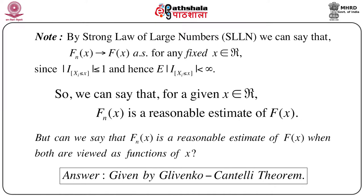Since the modulus of the indicator 1(X_i ≤ x) is ≤ 1, and the expectation of that indicator is finite, we can immediately say that for a given x in the real line, F_n(x) can be treated as a reasonable estimate of F(x). So for any given x, we have one reasonable estimate of F(x), which is nothing but the empirical distribution function evaluated at that point x.